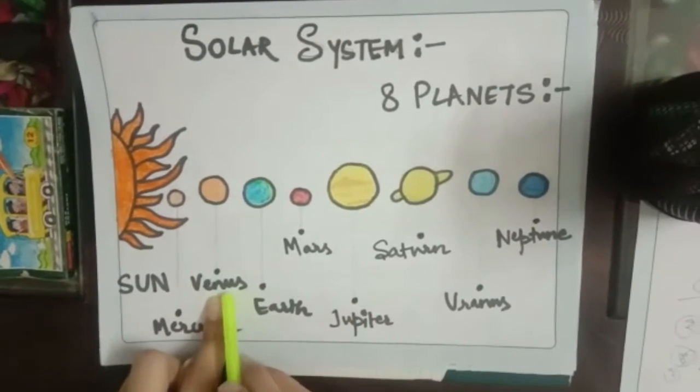So, we start with Mercury. Mercury is the friend of sun because it is the nearest planet to the sun. The second one is Venus. Venus is the hottest and brightest planet of all.